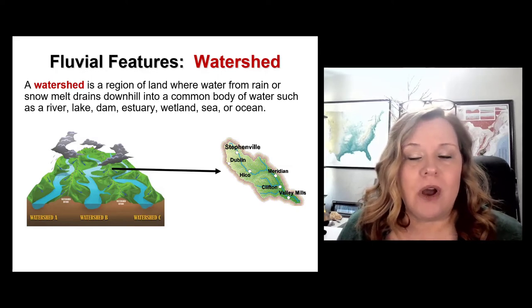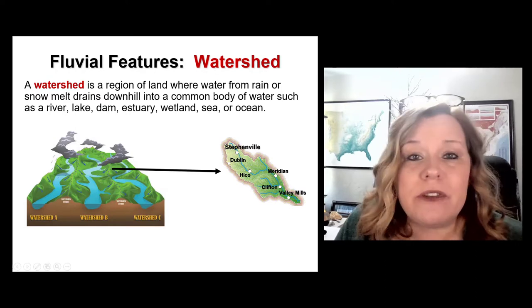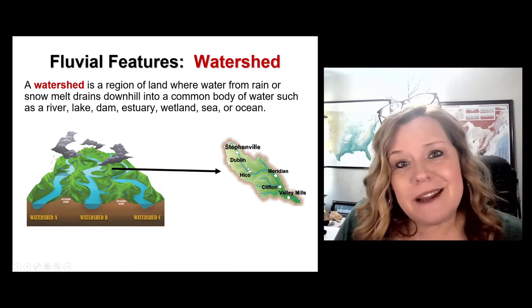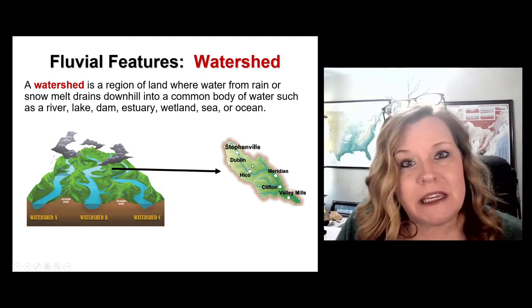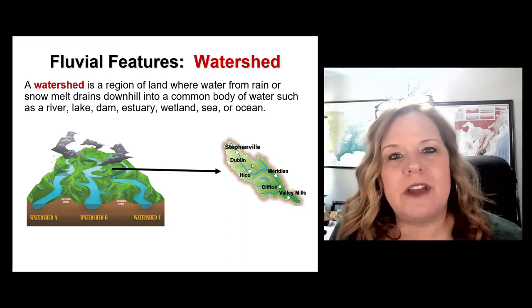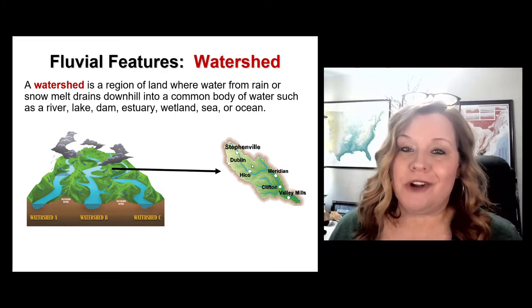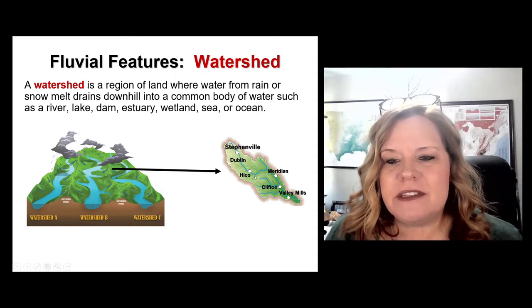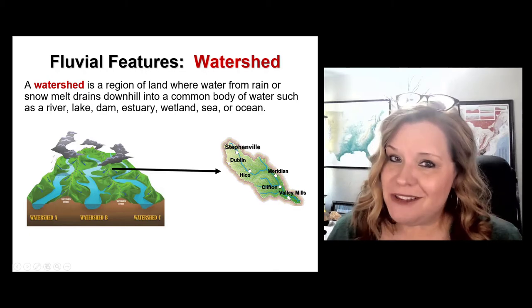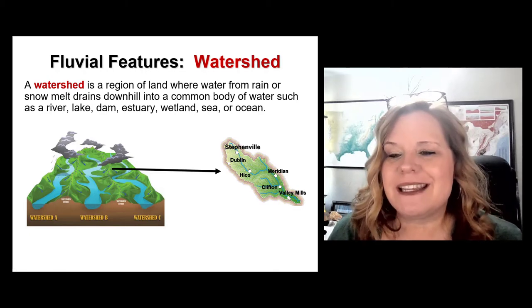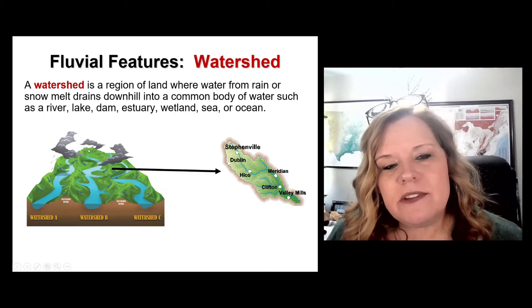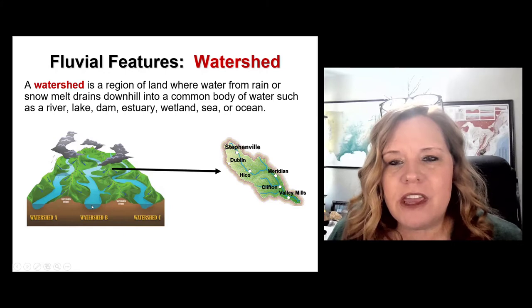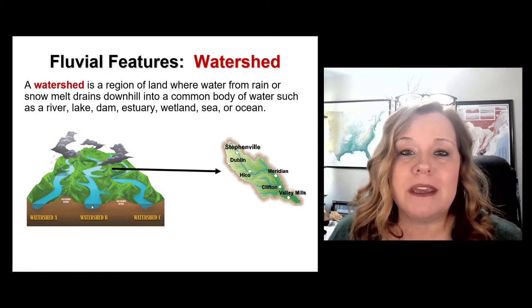Watersheds are classified in river segments by the EPA, and those river segments are designated based on how clean they need to be in terms of human contact or uses such as drinking water or recreation water for Lake Waco. The North Bosque River watershed — not the Bosque watershed but the North Bosque — has its origins way up at the headwaters and then feeds down to where it enters Lake Waco, which would be the mouth.